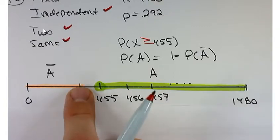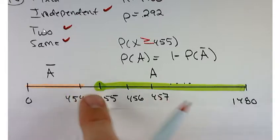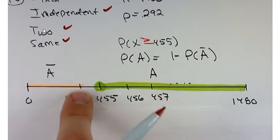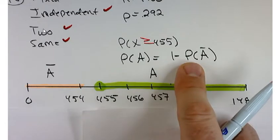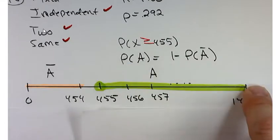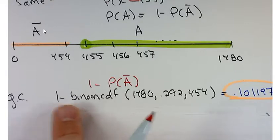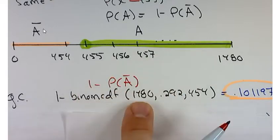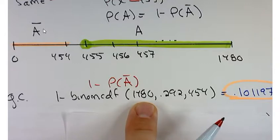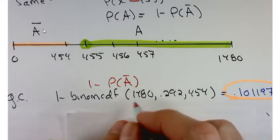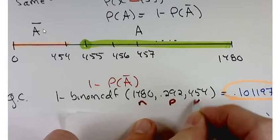Because the way the CDF works, the cumulative density function or the way you can use things in Google Sheets with true, I'd want to get the area to the left of 454. And then subtract it from 1 to get this probability over here in what I'll call the right tail. So you can do that on the graphing calculator with 1 minus the binomial CDF of 1480, which is your n, and this is your probability of success, and that's x.